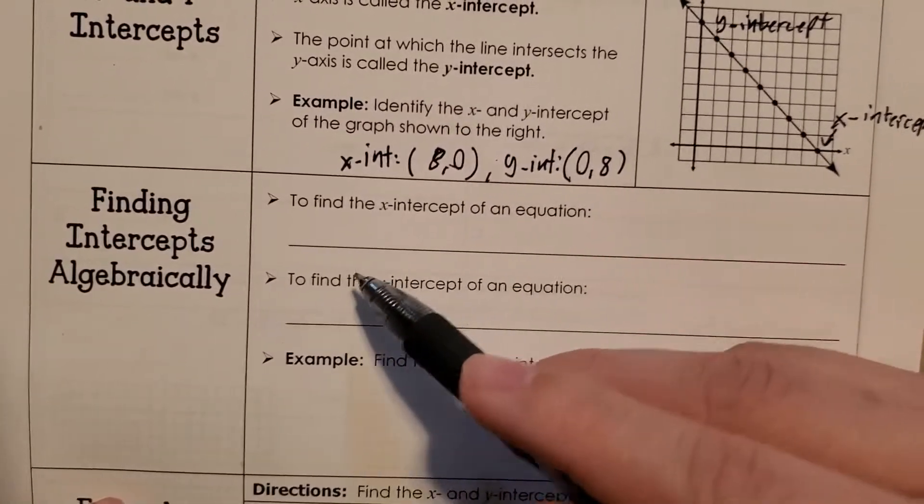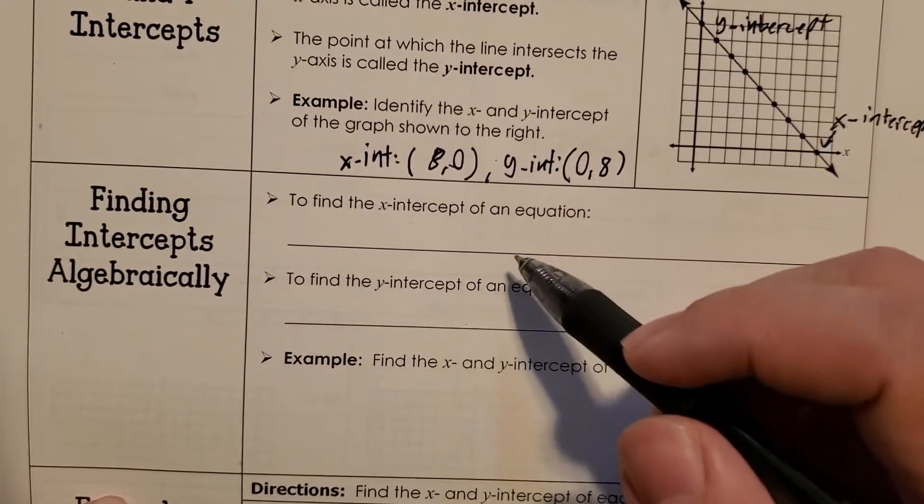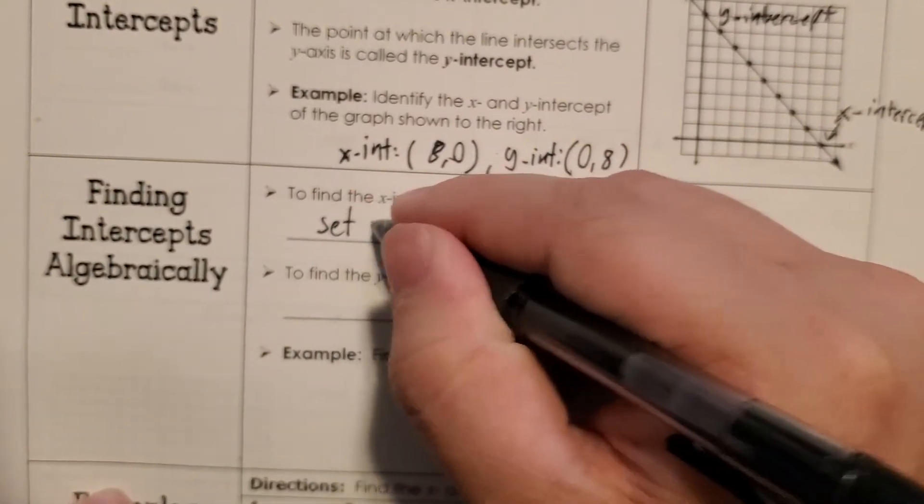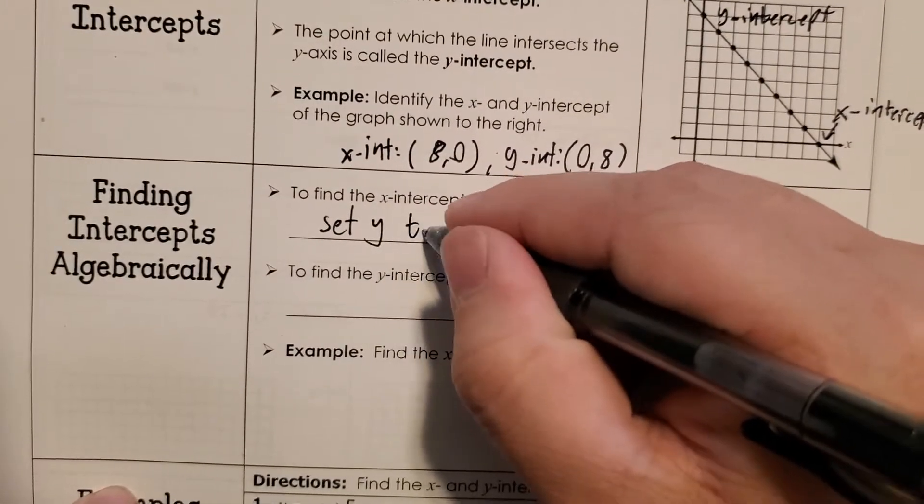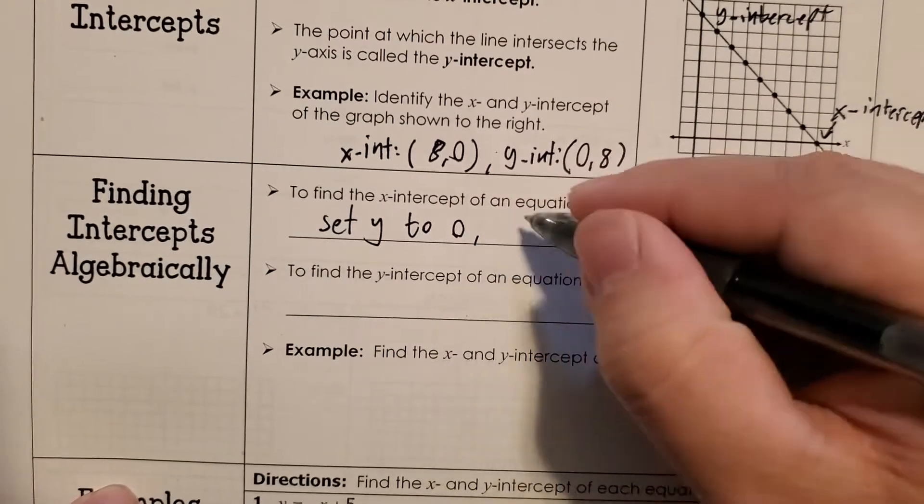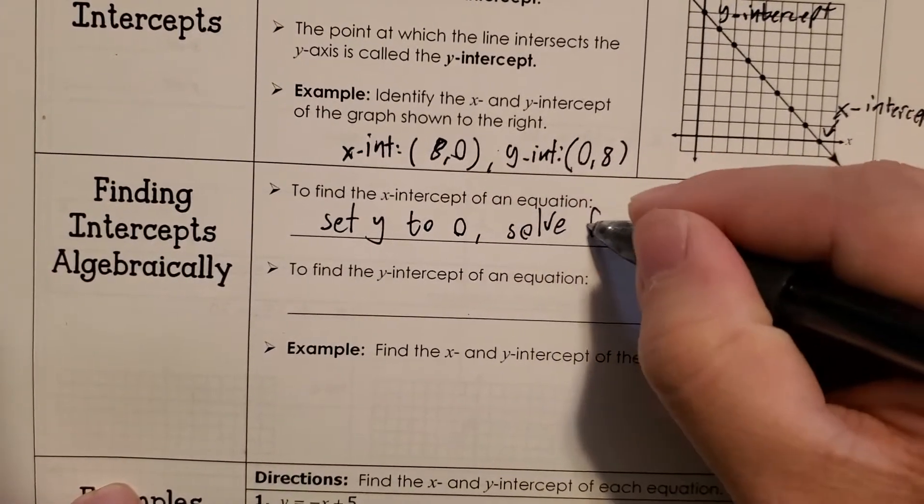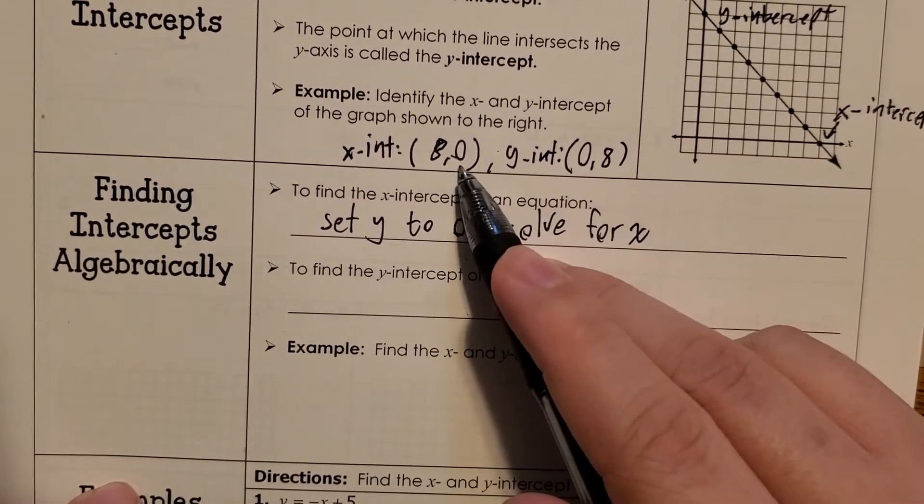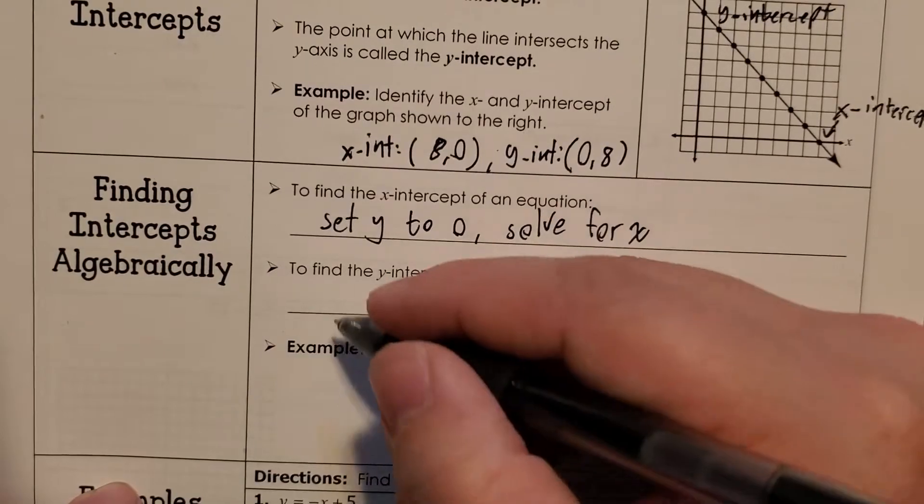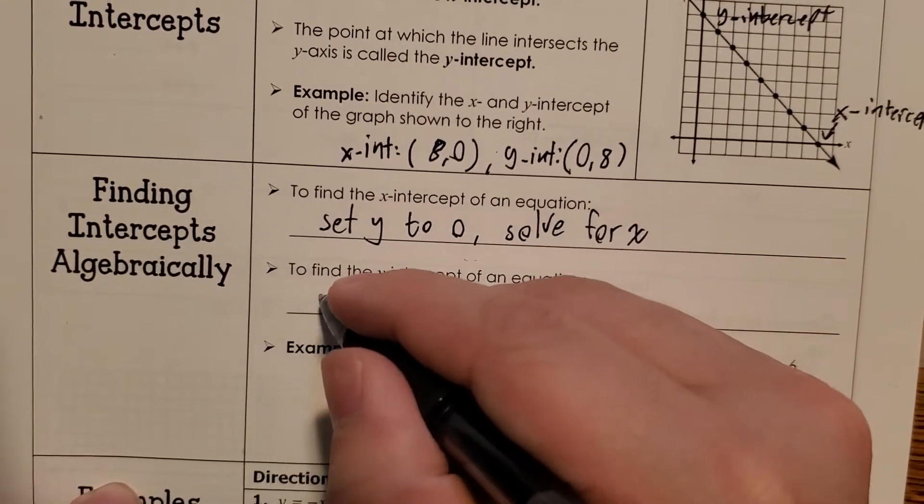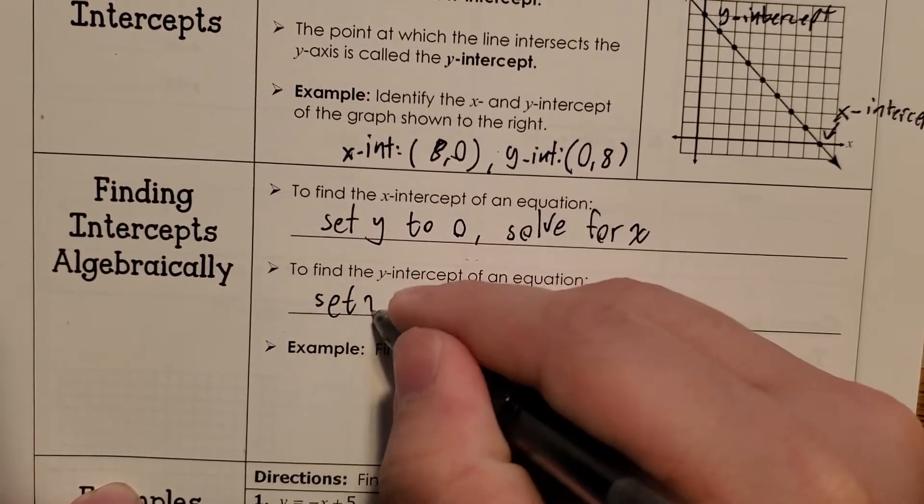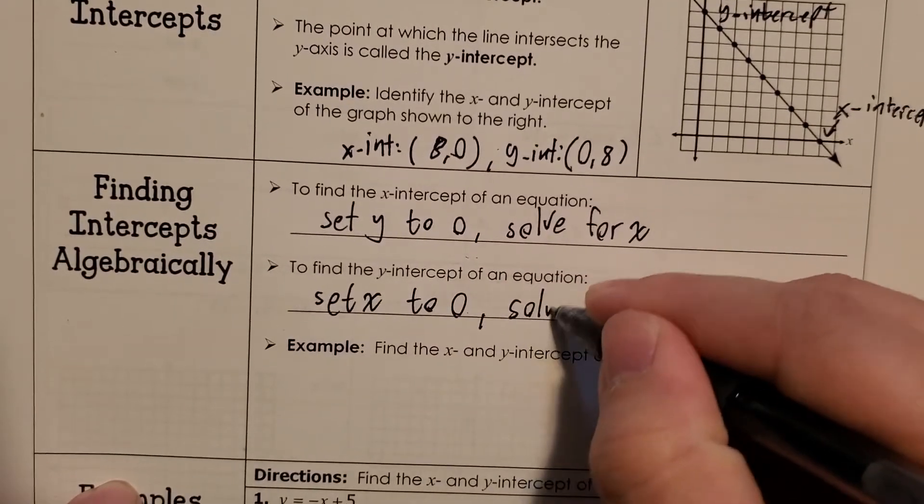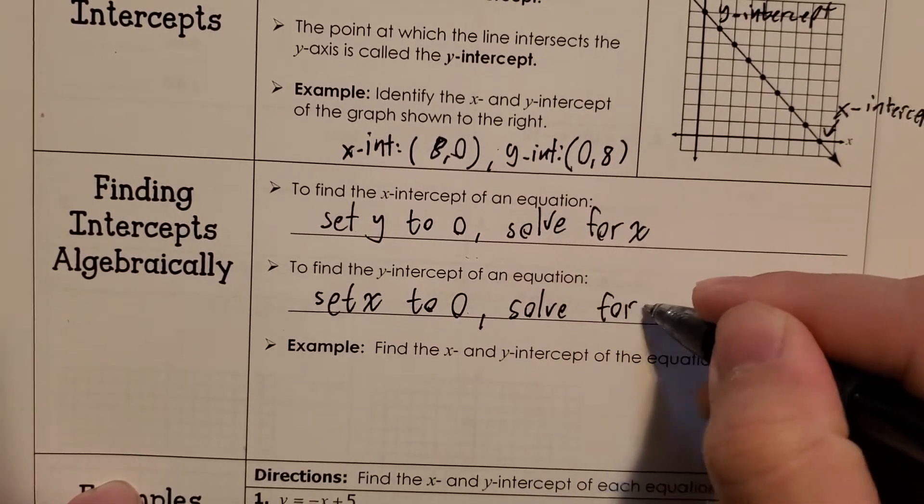So in order to find an x-intercept in an equation, we're just going to set y to 0 and then solve for x. That's it. Just set y to 0, solve for x. And then, shouldn't be too big of a surprise, to find the y-intercept, we're going to set x to 0 and then solve for y.